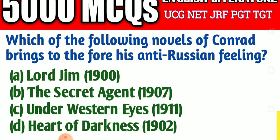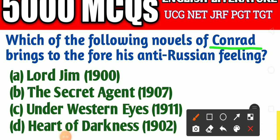The next question is: which of the following novels of Conrad brings to the fore his anti-Russian feeling? Option A: Lord Jim (19th century), Option B: The Secret Agent (1907), Option C: Under Western Eyes (1911), Option D: Heart of Darkness (1902). The right answer is Option C — Under Western Eyes.